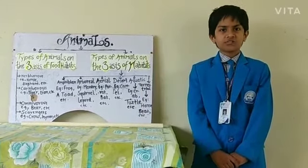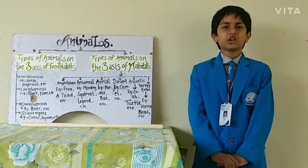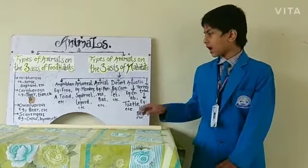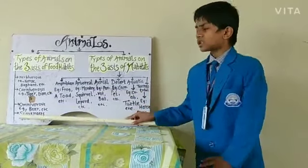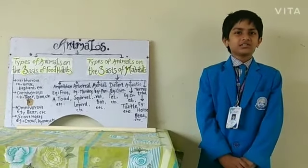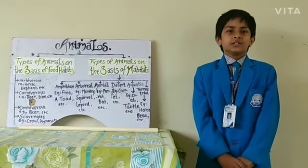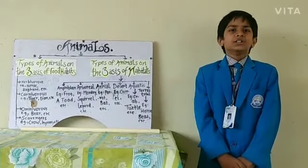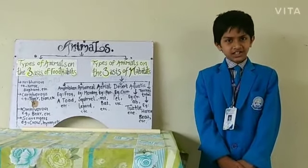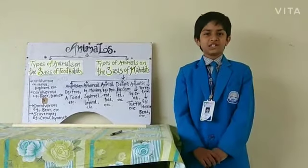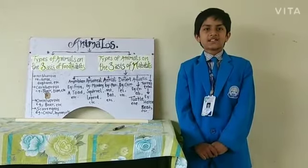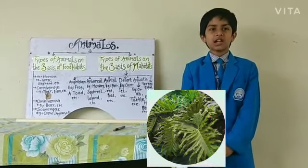As we all know, the lion is the king of the jungle and he eats the flesh of other animals. Animals that eat the flesh of other animals are called carnivorous. For example, tiger, lion, cheetah, fox, wolf, etc.